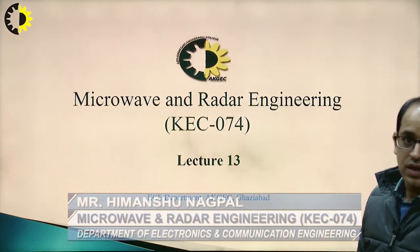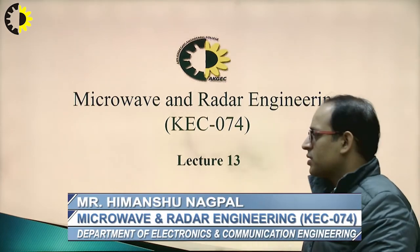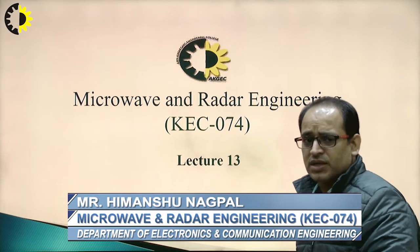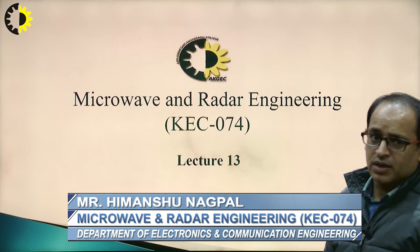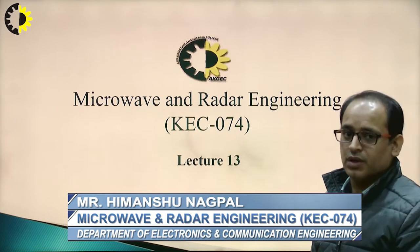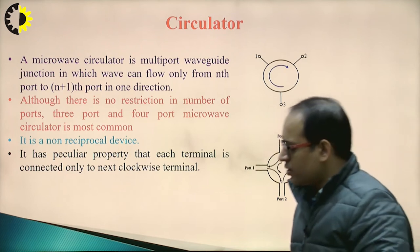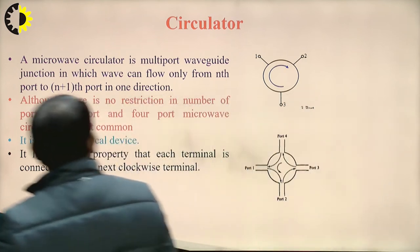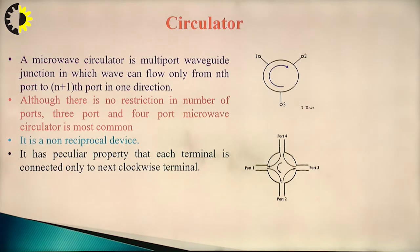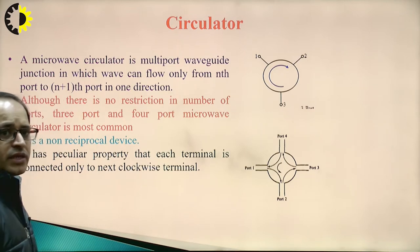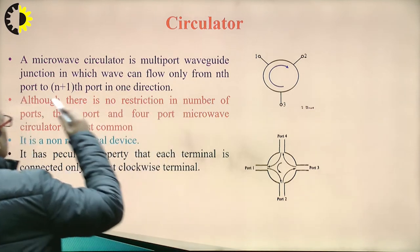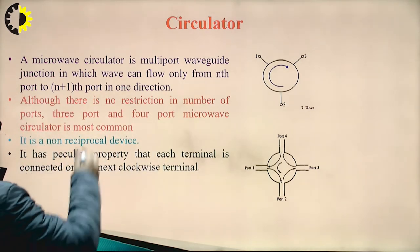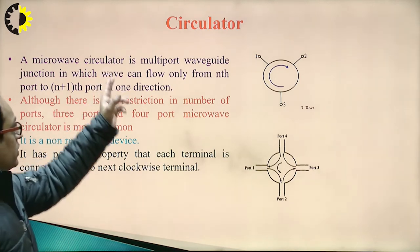Welcome to the class of Microwave and Radar Engineering, subject code KEC 074. This is lecture number 13. In the last lecture we discussed the working of the isolator, one of the microwave devices. In today's lecture we will discuss the circulator, also one of the microwave devices. A circulator is a multi-port waveguide junction in which a wave can only flow from the nth port to the n+1th port in one direction.